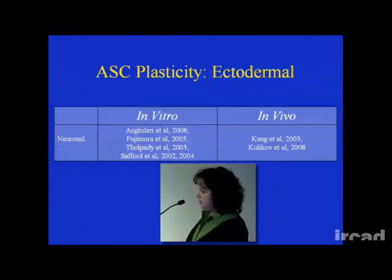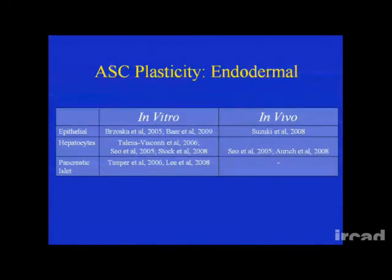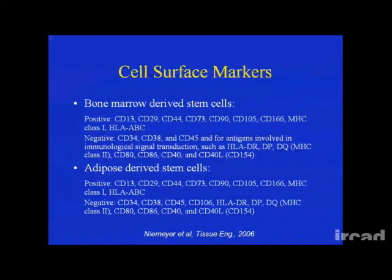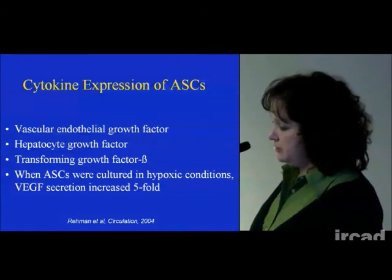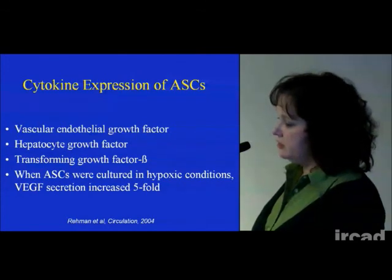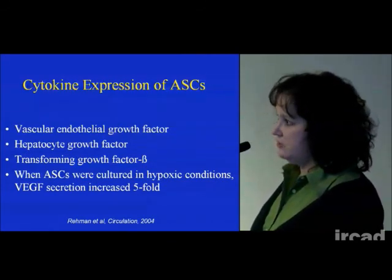There's a lot of research attempting to utilize the stem cells in fat to differentiate into neurons. As for endodermal tissue such as liver or epithelial cells, we're still in the early stages and trying to determine what factors can make these cells differentiate into keratinocytes or hepatocytes. These cells are very similar to bone marrow-derived stem cells with very similar surface markers, and also appear to be immunologically inert without an immunological response. Mainly, though, these cells are utilized for their cytokine expression — ASCs express growth factors such as VEGF (vascular endothelial growth factor), HGF, and TGF-beta. When cultured under hypoxic conditions, their expression of these angiogenic factors increases.